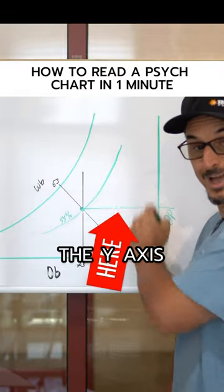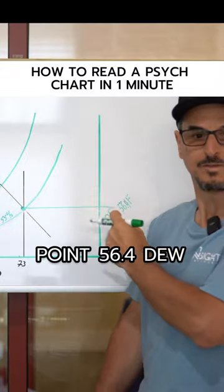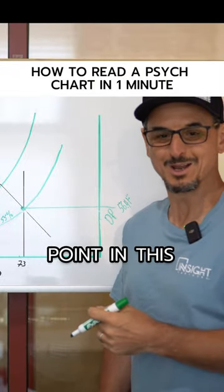Dew points on the y-axis. Increasing dew point. Decreasing dew point. 56.4 dew point in this office.